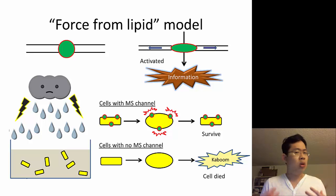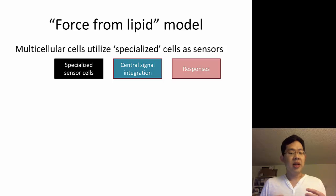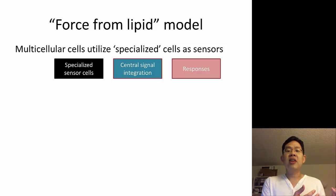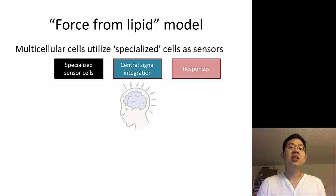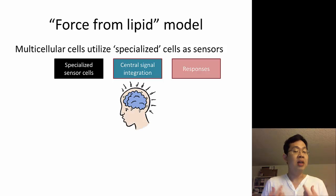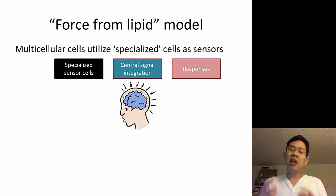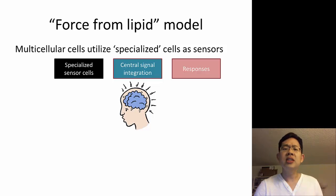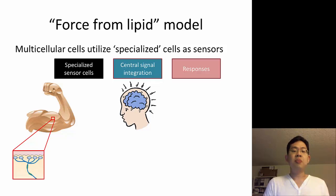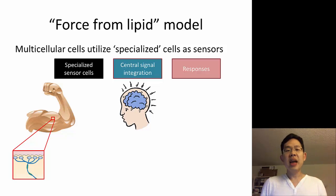What about organisms like us — multicellular organisms? It's a little more complicated. Organisms like us utilize specialized sensor cells to sense external mechanical cues, and then from these specialized cells we relay the information into the central processing unit of our body, which is the brain, and from there we decide whether to make a particular response. For example, suppose this is your arm, and underneath your arm you have specialized cells that are responsive to mechanical cues like punching, pinching, or poking. These specialized cells express mechanosensitive channels.